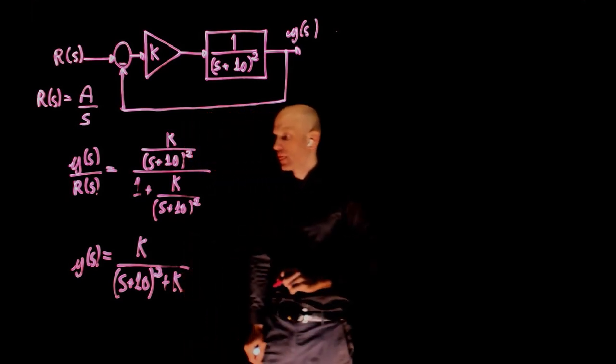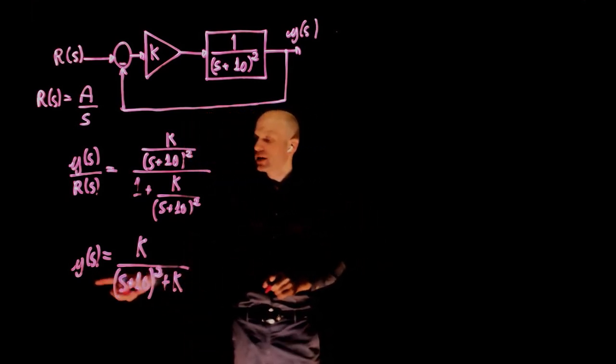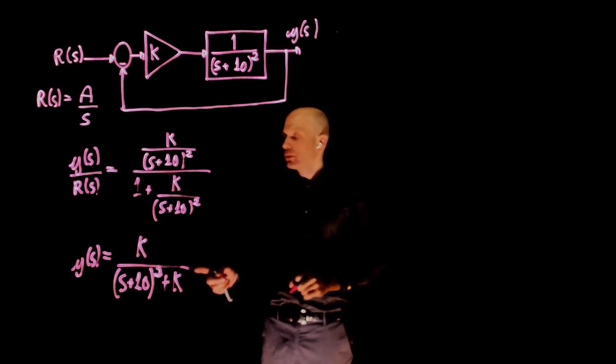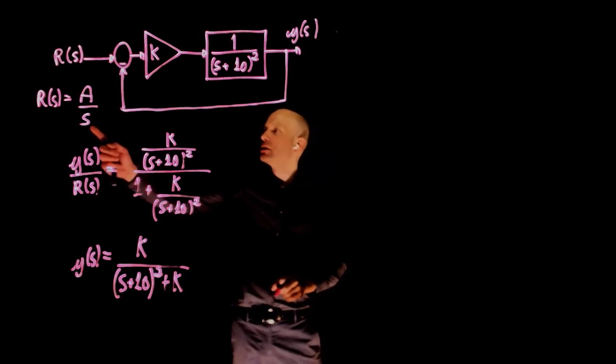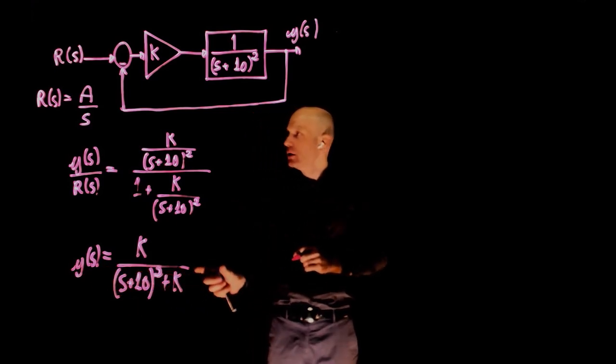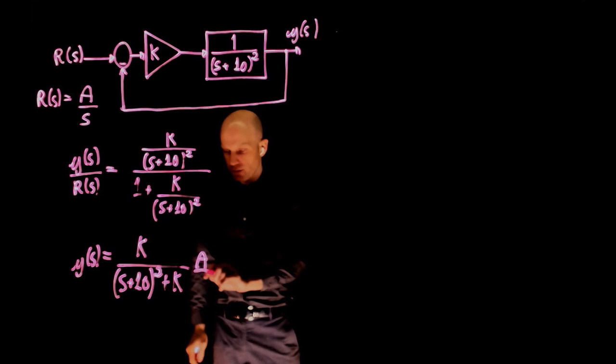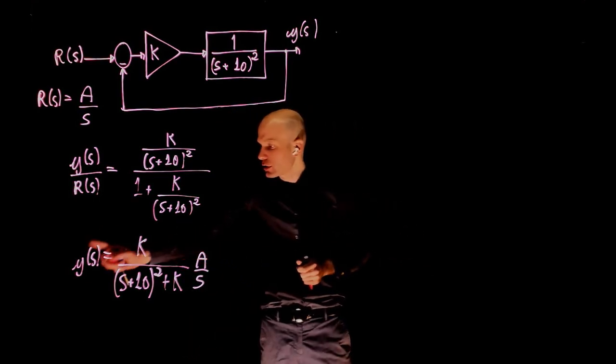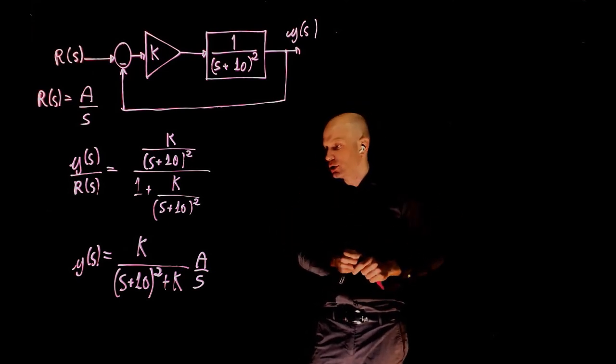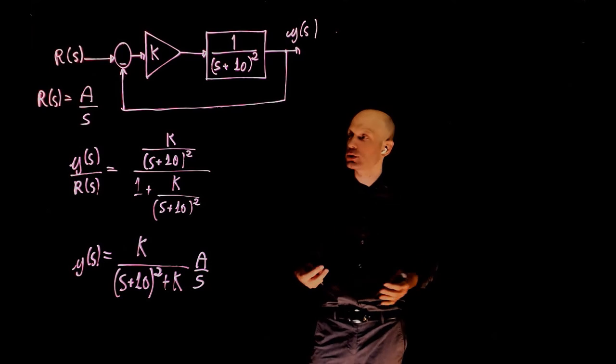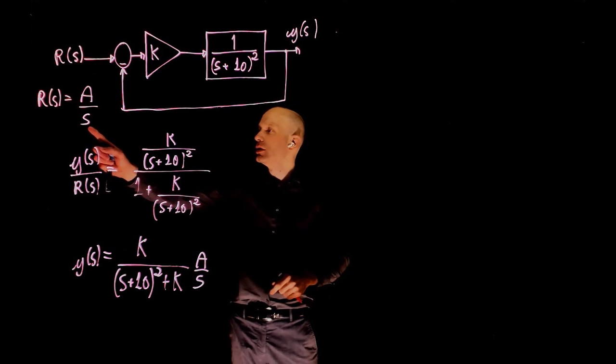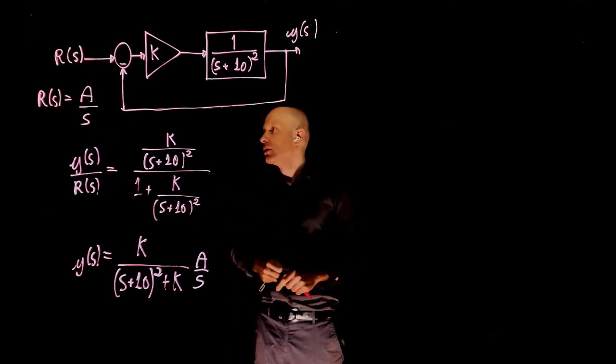Now you notice that I didn't divide this by r of s, because you can move r of s to this side of the equation, and now replace that with the input command a over s. So y of s is this transfer function times r, r is a over s. If you now do the inverse Laplace of this function, we can find the temporal response of the robot's position to this step command. This is not what we want to do in this case, we just want to know what is the final value of y, and how that compares to the given command that is a over s.